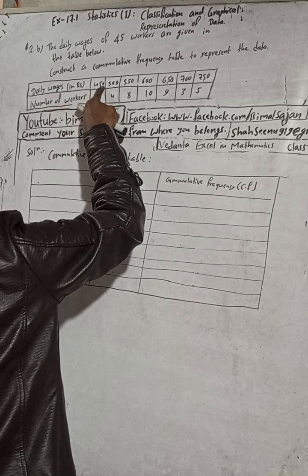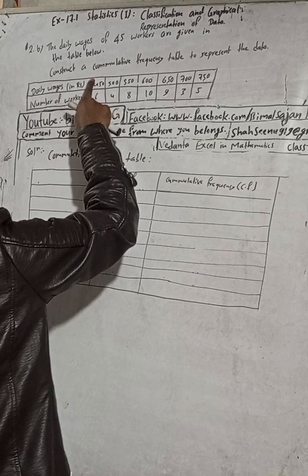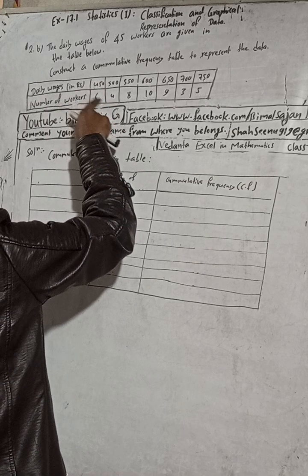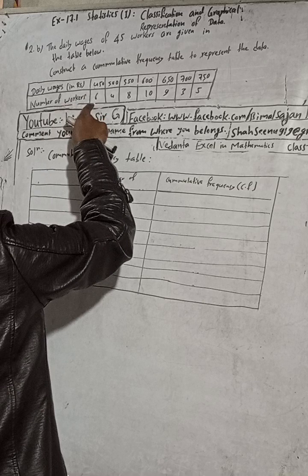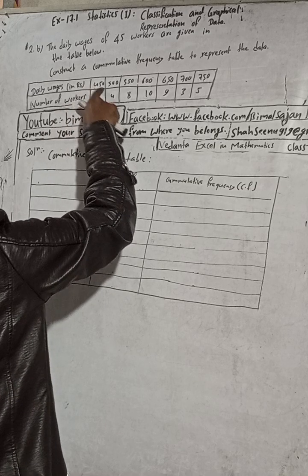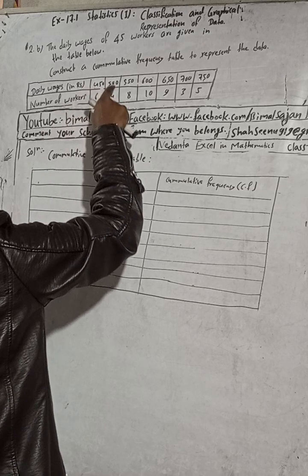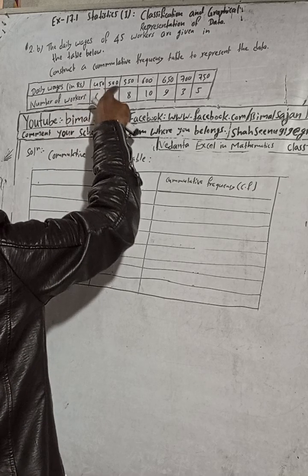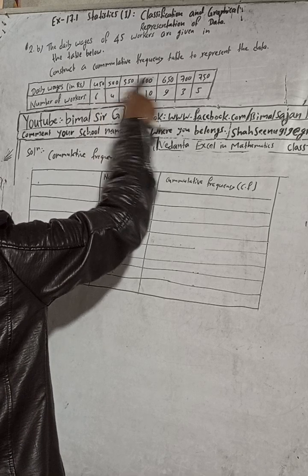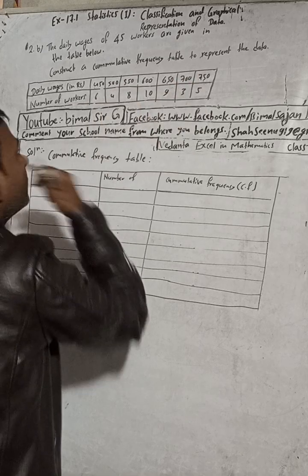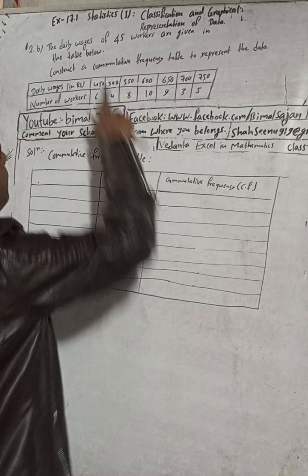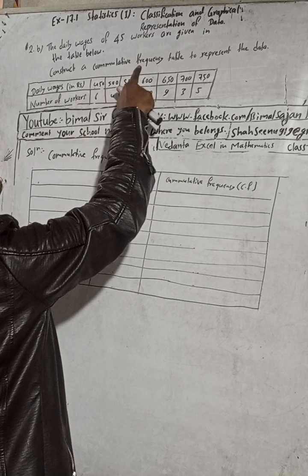So daily wages of 45 workers are given in the table below. Daily wages 450 is for 6 workers, 500 is for 4 workers, 550 is for 8 workers — different wages are given here. We have to construct a cumulative frequency table.